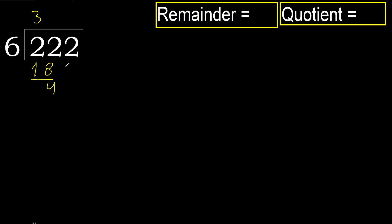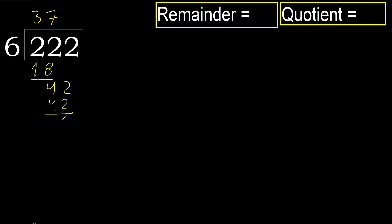Subtract, then next: 42. 6 multiplied by 8 is greater. 6 multiplied by 7 — 42 is not greater. Okay, subtract.